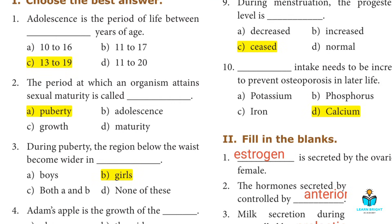Second: The period at which an organism attains sexual maturity is called? Answer A: Puberty.